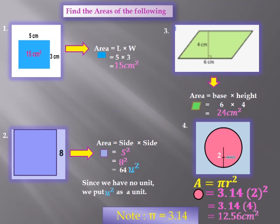Now we are going to find the areas of the following. The first one is a rectangle of length 5 cm and width 3 cm. Area = length × width = 5 × 3 = 15 cm². The second one is a square of side 8. Area = side² = 8² = 64 unit square, since we have no unit. The third is a parallelogram of base 6 cm and height 4 cm. Area = base × height = 6 × 4 = 24 cm². The fourth is a circle of radius 2. Area = π r² = 3.14 × 2² = 3.14 × 4 = 12.56 cm².